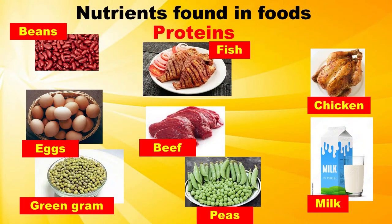Examples of animal proteins include beef, fish, eggs, mutton, termites, and milk.